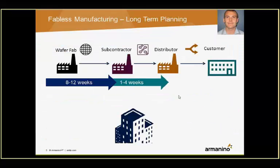The other key part here is that there are long lead times and long-term planning required. The wafer fab raw material purchase is an 8 to 12-week process to produce, so from the time you commit an order to the time you receive it, it can take up to three months. Once the products are ready and sent off to the subcontractor for build-out of whatever that finished good product should be, that could be a one- to four-week process as well, and there's a degree of variability in there.